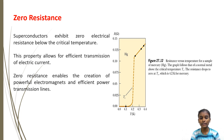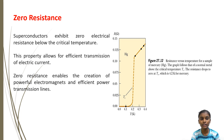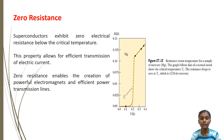Zero resistance: superconductors have zero resistance. A superconductor is a material that can conduct electricity or transport electrons from one atom to another with no resistance. This means current can pass through the material without causing any heat energy loss. Superconductors exhibit zero electrical resistance below the critical temperature, allowing for efficient transmission of electric current and enabling the creation of powerful electromagnets and efficient power transmission lines.